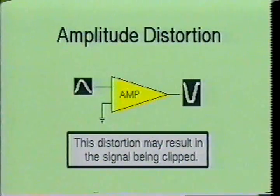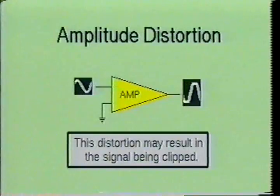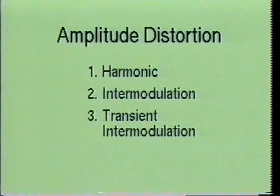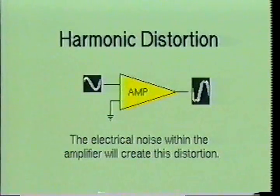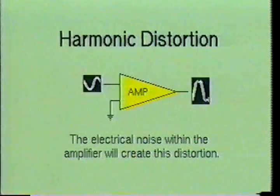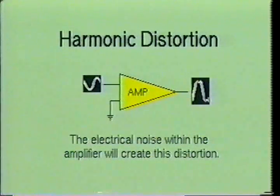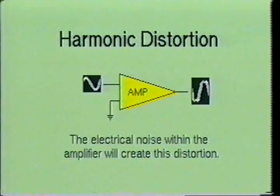Amplitude distortion occurs when the output signal is not a faithful reproduction of the input signal or wave shape. This may be caused by the amplifier being driven into saturation and clipping the peaks of the signal. There are three other types of amplitude distortion: harmonic, intermodulation, and transient intermodulation. Harmonic distortion occurs when unwanted frequencies are added to the amplified signal. Harmonic distortion is impossible to completely eliminate in practical amplifying devices and is usually generated during the process of amplification. The total harmonic distortion will be given as a percentage of the output signal.